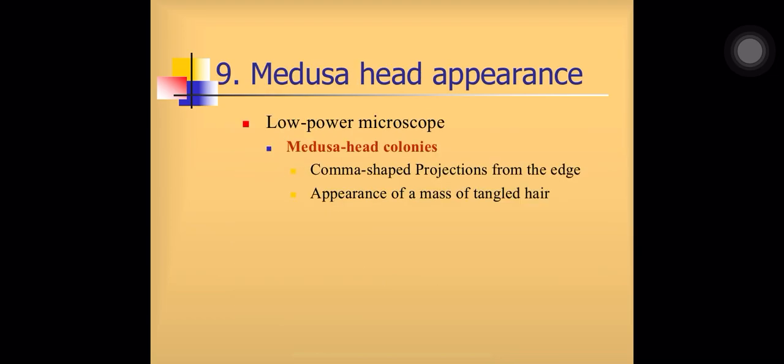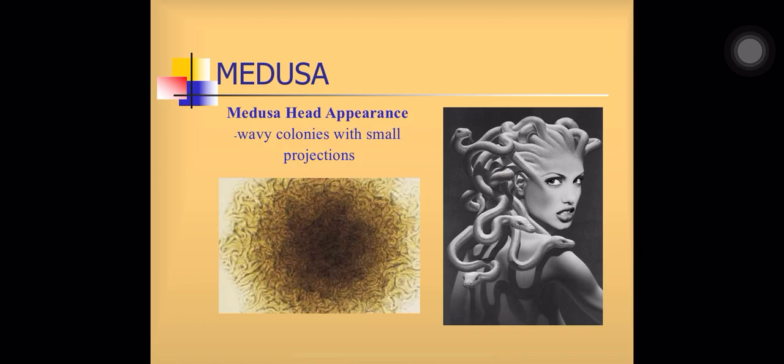In low power microscope, when you observe the colony of Bacillus anthracis, you can see entangled masses of chains at the edge of the colony. These entangled masses look like the head of Medusa — a Greek character who had snakes on her head instead of hair — and so it is known as medusa head appearance. At the edge of the colony, entangled masses of chains of gram-positive bacilli are seen.